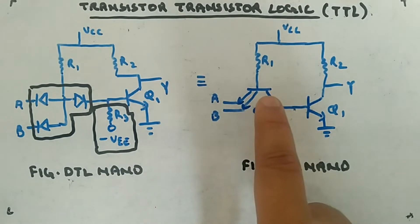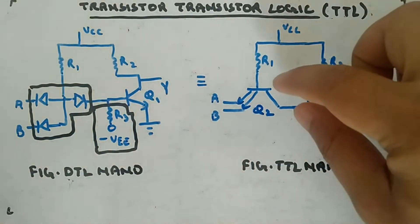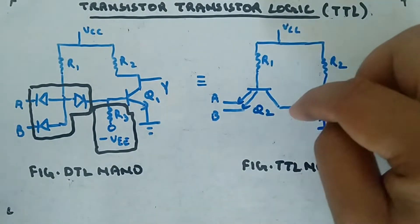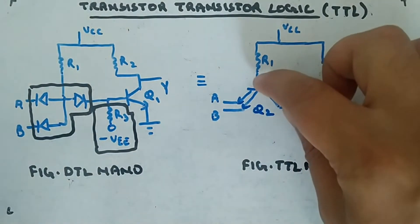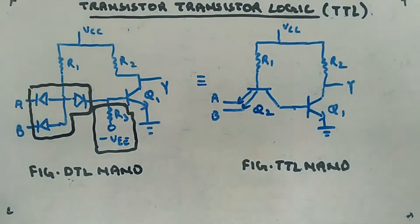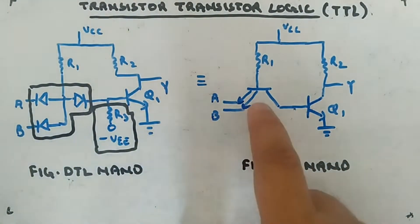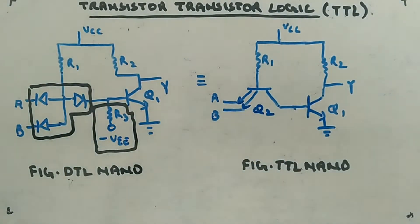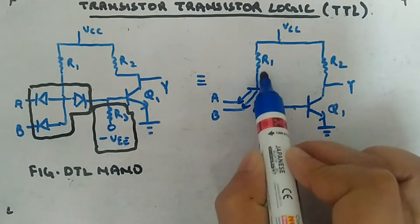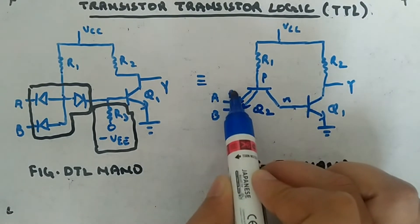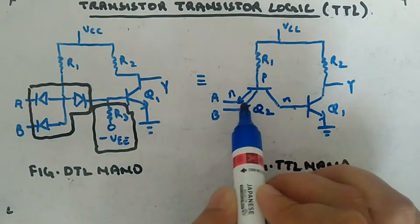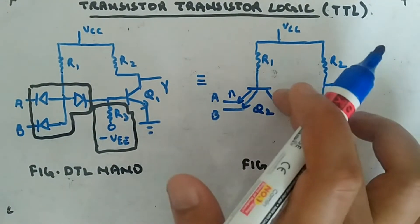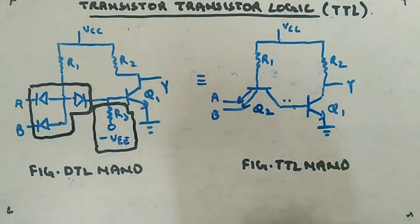I have replaced the three-diode combination with this multi-emitter transistor. You can see it is an NPN transistor — the arrow is going out. NPN means there is one PN junction here and two PN junctions here, because two emitter lines are there. These two diodes are represented by these two lines, and this diode by this line. Here it is P, here it is N, and here also N — PN, PN junctions for each input.